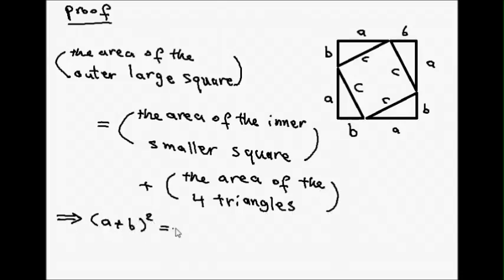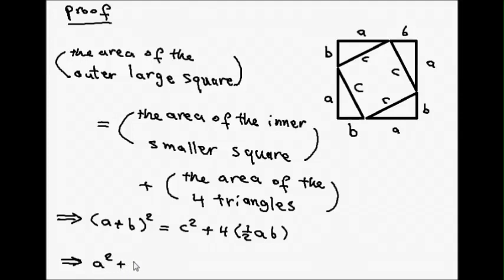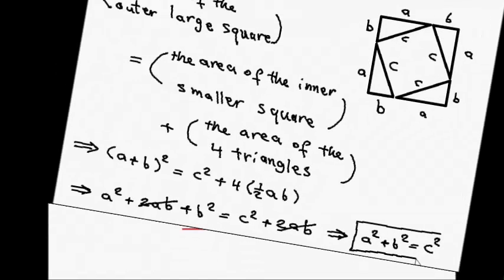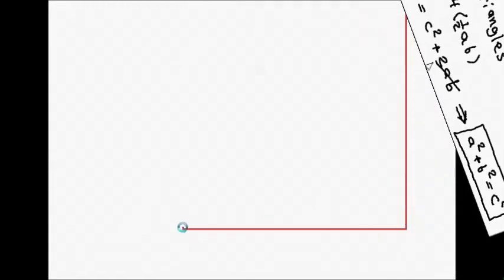Now using the areas: the area of the larger square is (A + B) squared, the inner one is C squared, and the area of each triangle is half AB. Simplifying this equation, there will be a term 2AB that cancels, and then we come up with the famous Pythagorean formula. I totally agree with that proof.